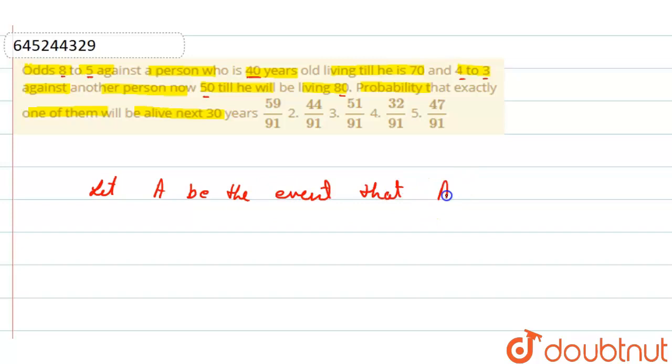So now let A be the event that A will die in 30 years.